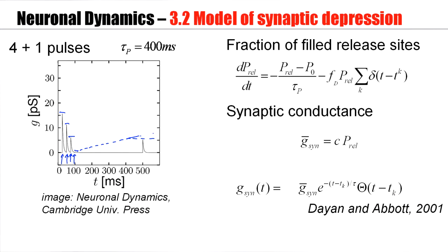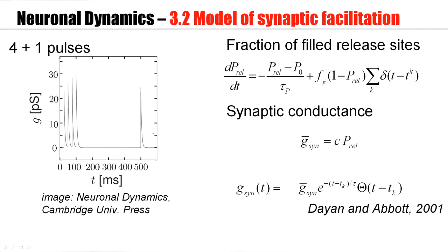Many synapses show depression, but some synapses also show facilitation. Facilitation is the inverse effect. With each spike, the response gets stronger. The first pulse that arrives causes a response of this size. The second pulse, a stronger response. The third pulse, an even stronger response, and so forth. And then it takes some time to recover back to the normal value in this model simulation. It was set to 200 milliseconds.